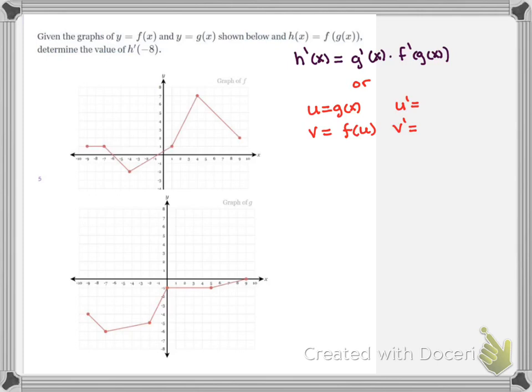So in this question you've been asked to find the derivative of h at negative 8, and h is this composite function that's got an inner and outer function, so we're going to need the chain rule.